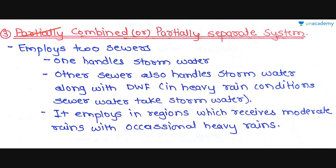The third type is the partially combined or partially separate system. Two sewers are provided: one handles storm water and the other also handles storm water along with dry weather flow during heavy rain conditions. So the dry weather flow sewer takes storm water as well during heavy rainfall. This system is employed in regions that receive moderate rains with occasional heavy rains.